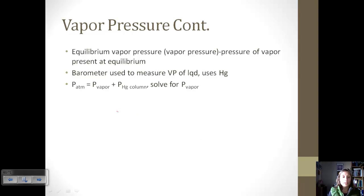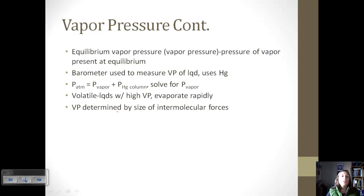The pressure of the atmosphere is equal to the vapor pressure plus the pressure of mercury in the column. Basically, when we use a barometer, we can solve for vapor pressure. Liquids that have a high vapor pressure are going to evaporate really rapidly, and those are called volatile. Alcohol is an example, like rubbing alcohol. It evaporates relatively quickly.